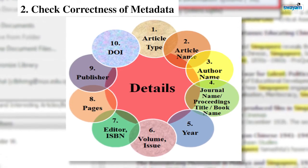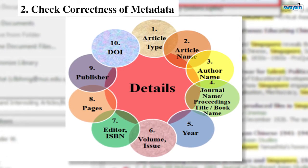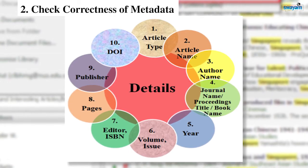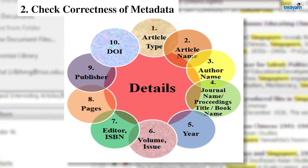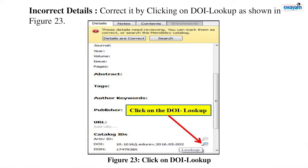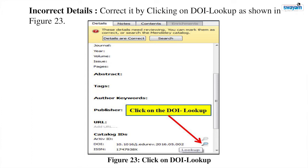There are two things that can happen: the details fetched by Mendeley can be correct or they can be incorrect. As you see in figure 23, we are getting a dialogue box. This dialogue box depicts that Mendeley is not sure about the details of this document. As you can see, the name of the journal, year, volume, issue, pages, abstract, and tags — it is all empty. Nothing has been fetched as details for this document.